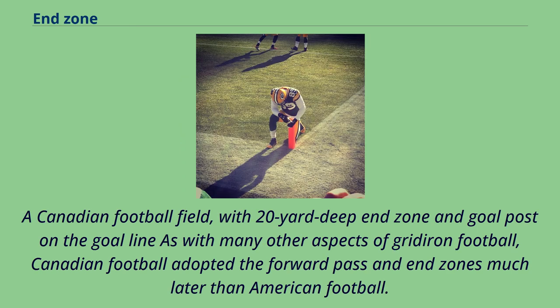In Canadian football, with its 20-yard deep end zone and goal post on the goal line, as with many other aspects of gridiron football, Canadian football adopted the forward pass and end zones much later than American football.